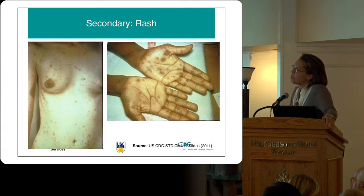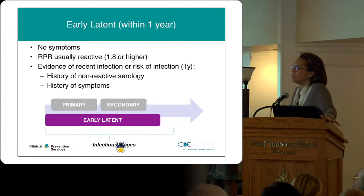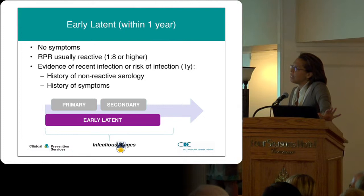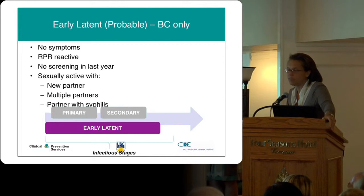Early latent syphilis is usually within one year, and again the RPR is usually reactive at 1:8 or higher, with evidence of recent infection or risk. Often there's a history of non-reactive serology — a negative test in the past — or a history of symptoms. In BC we also have 'early latent probable,' where folks have no symptoms but the RPR is reactive and they haven't had screening in the past year, with a clinical history consistent with risk for acquisition.